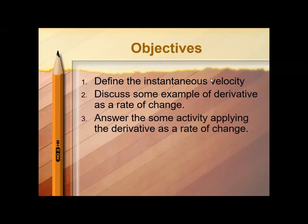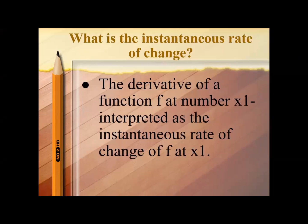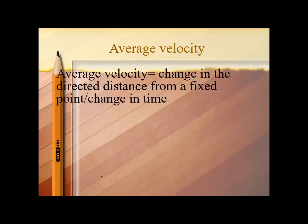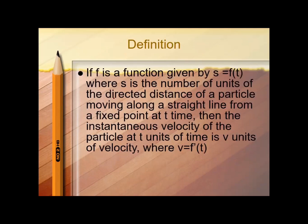We are first going to define what is the instantaneous rate of change. The derivative of a function f at number x₁ is interpreted as the instantaneous rate of change of f at x₁. For rectilinear motion — the motion of a particle in a line — the average velocity is the change in directed distance from a fixed point over the change in time, which is the derivative of s with respect to time. If a function is given by s = f(t), where s is the directed distance of a particle from a fixed point at time t, then the instantaneous velocity v = f′(t).